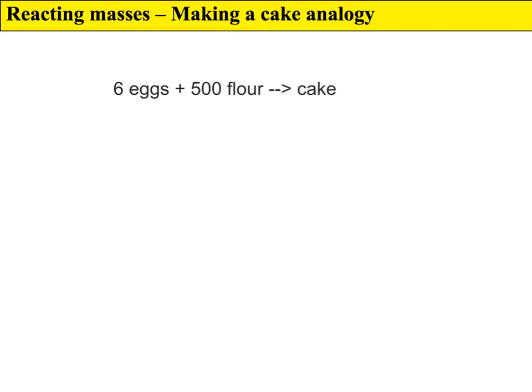Reacting masses, stoichiometry, molar ratios - you can explain it using a cake analogy. For example, if you're making a cake, say this particular cake needs six eggs and 500 grams of flour.